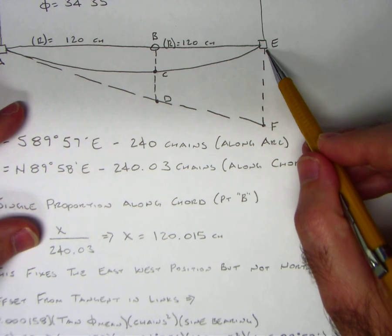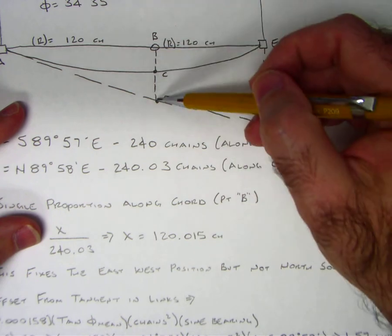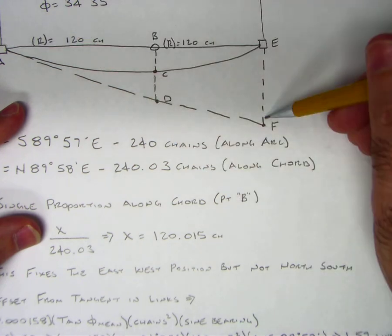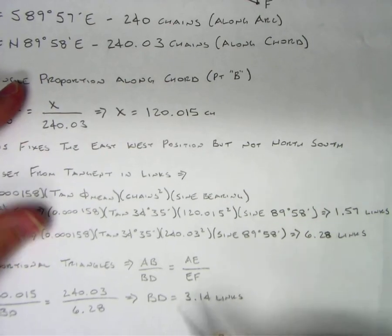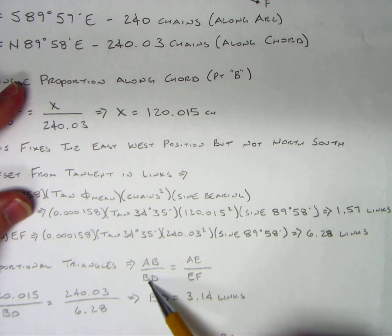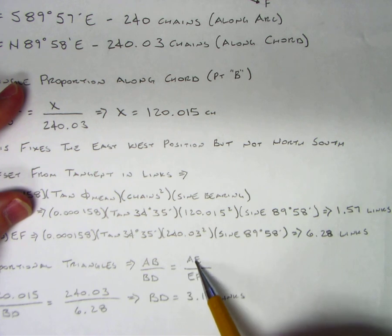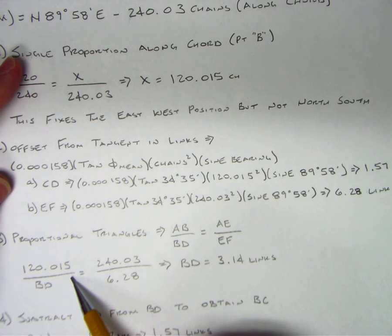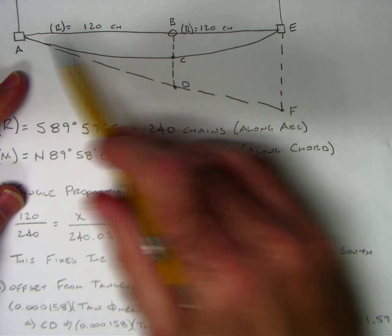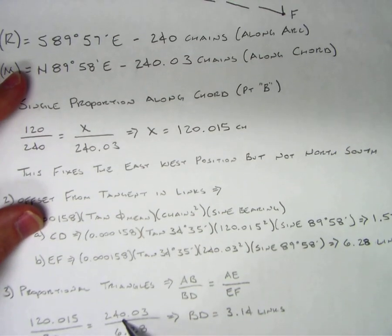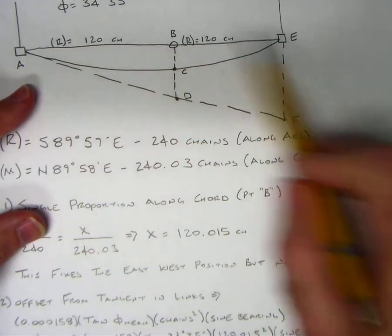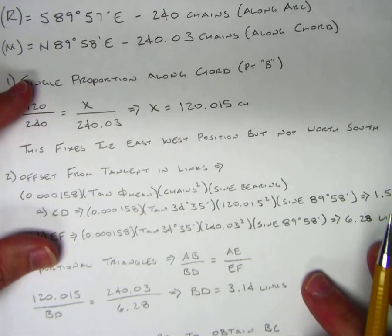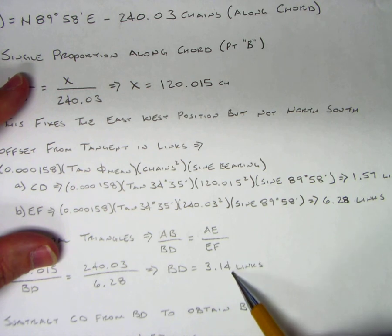Next we're going to solve some proportional triangles. We'll look at D to B and A to B, then A to E and E to F. Distance from A to B is to distance B to D as distance A to E is to E to F. So 120.015 is to BD as 240.03 is to 6.28. Solving this, we get BD is 3.14 links.